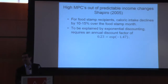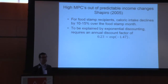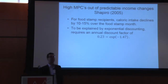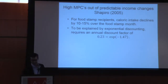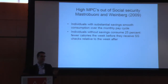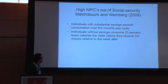Very high MPCs also show up with predictable income movements. A paper by Jesse Shapiro shows that for food stamp recipients, caloric intake declines predictably by 10–15% over the course of the food stamp month. To explain this, you'd need an exponential discounting model with an annual discount factor of 0.23, implying an annual discount rate of 147%. Similar results from Mastrobulloni and Weinberg in the Social Security domain: for households without liquidity, there's a 25% reduction in caloric intake during that month.